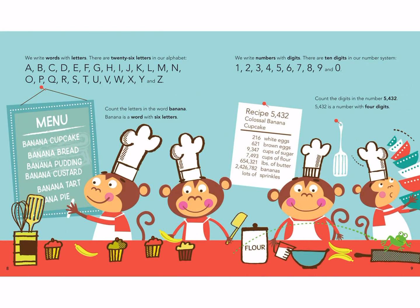We write words with letters. There are 26 letters in our alphabet: A, B, C, D, E, F, G, H, I, J, K, L, M, N, O, P, Q, R, S, T, U, V, W, X, Y, and Z. Count the letters in the word banana — banana is a word with six letters.